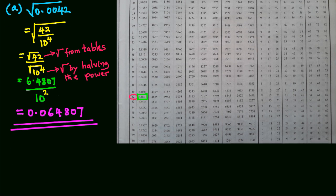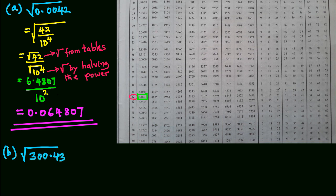In a similar way, we can evaluate square root of 300.43 using tables. In this case, we express this as root of 3.0043 times 10 power 2.